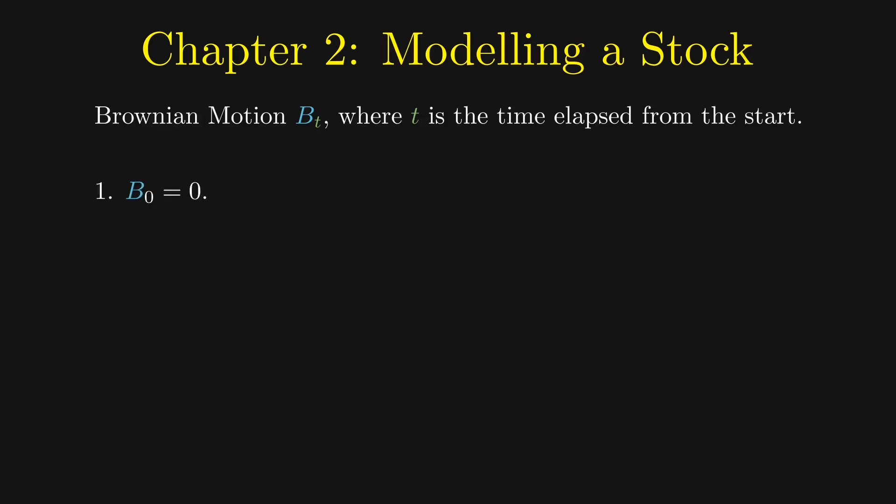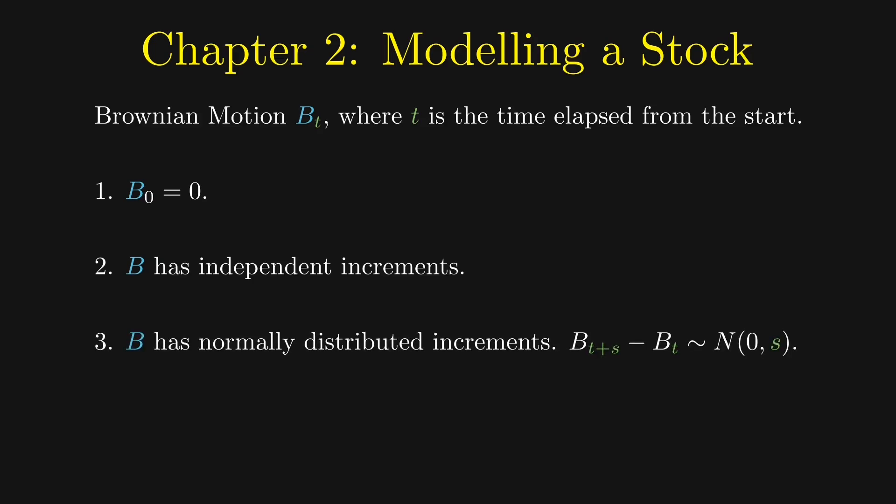Firstly, B_0 is zero, as we start our process at zero. Secondly, B has independent increments. Thirdly, B has normally distributed increments with mean zero and variance equal to the interval. This matches our observations. Lastly, B is continuous. This is a simplifying assumption to ignore any jumps in the stock price.